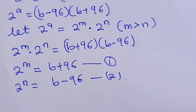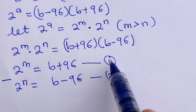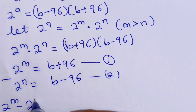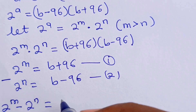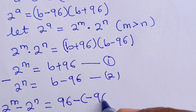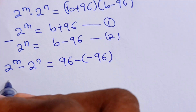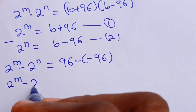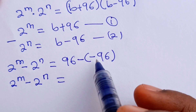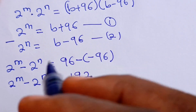Now we can solve this as simultaneous equations using the elimination method. If we subtract equation 2 from equation 1, we have 2 to the power of M minus 2 to the power of N is equal to B plus 96 minus (B minus 96), which gives us 96 plus 96, equal to 192.